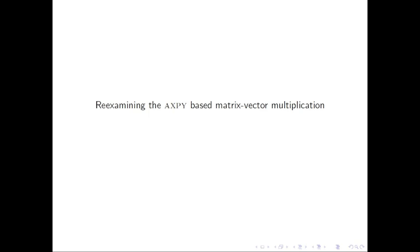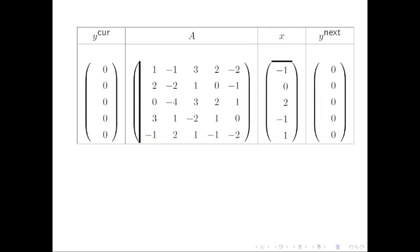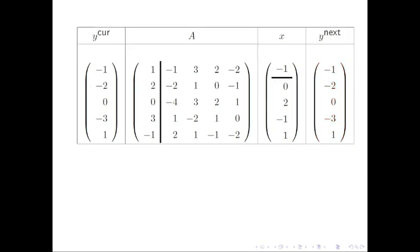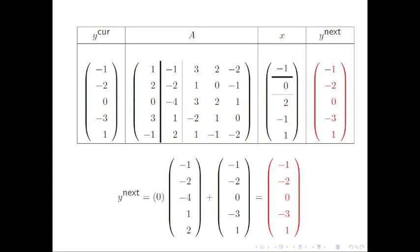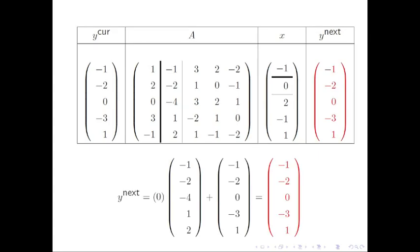Now let's look at the algorithm for computing a matrix-vector multiplication that marches through the matrix by columns and performs an axpy operation. The algorithm exposes the first column of A, multiplies it by the first component of x, and adds the result to y. This is an axpy operation. It then does the same thing with the second column of A and the second component of x, and so forth.